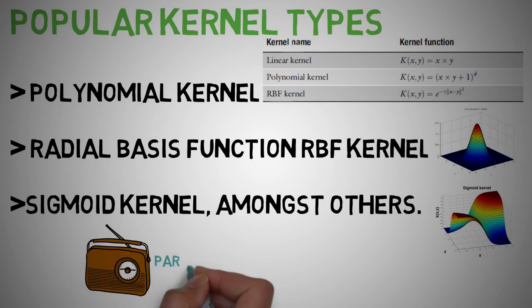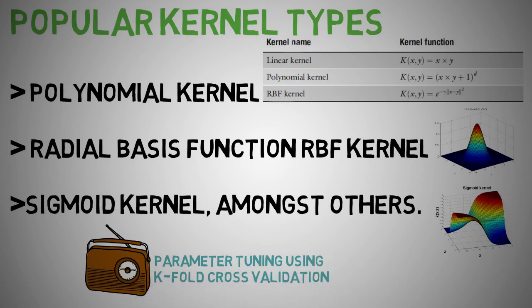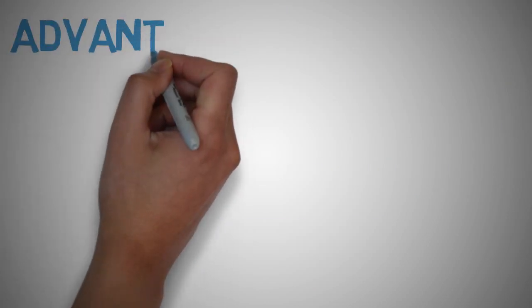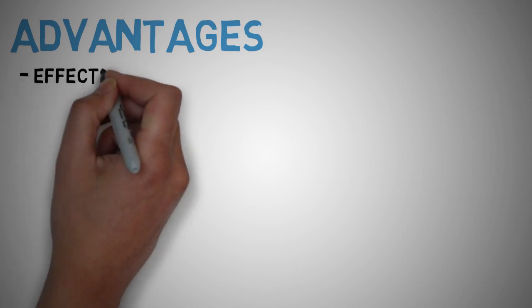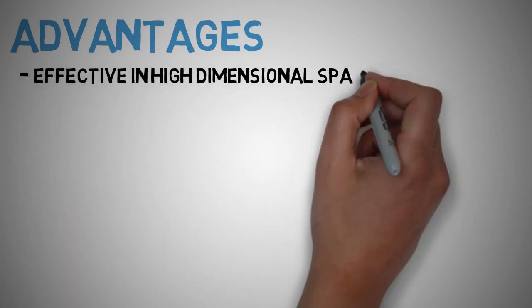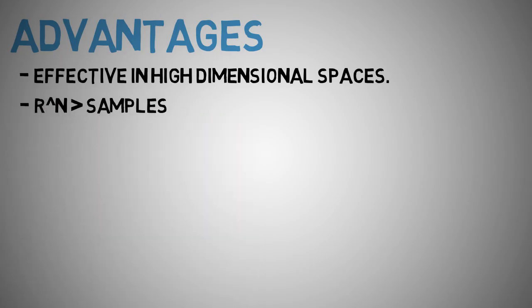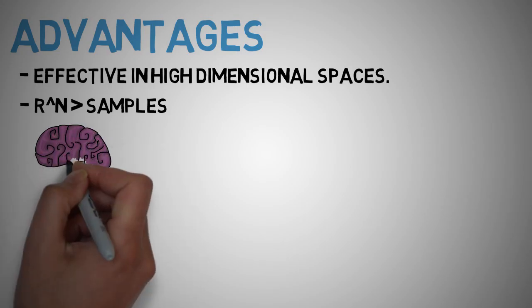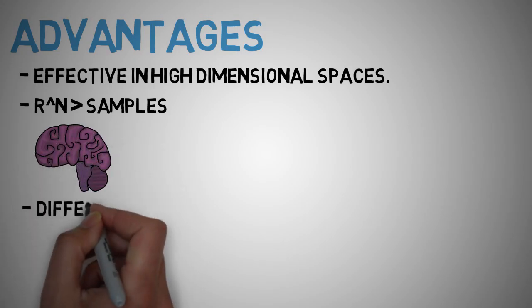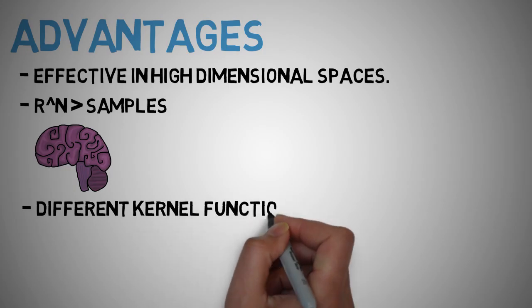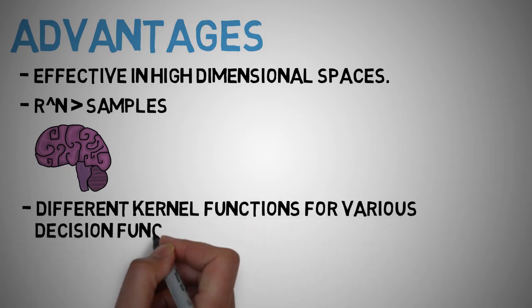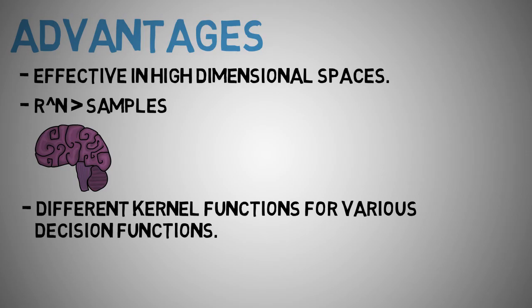The advantages of support vector machines are that they are effective in high dimensional spaces, they are still effective in cases where number of dimensions is greater than the number of samples, they use a subset of training points in the decision function or support vectors so it's also memory efficient. Support vectors are versatile, so different kernels can be specified for the decision function. Common kernels are provided but it's also possible to specify custom kernels. We can add kernel functions together to achieve even more complex hyperplanes.